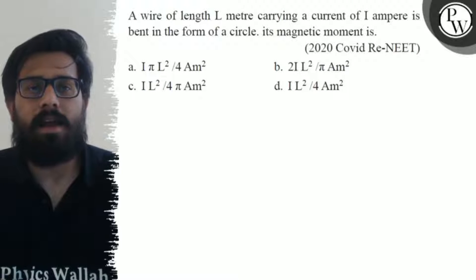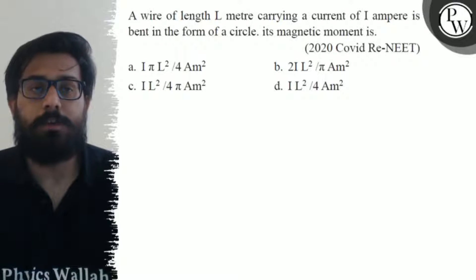Hello bachos, so let's see the question. A wire of length L meters carrying a current of I ampere is bent in the form of a circle. Its magnetic moment is: Your first option is I π L² upon 4 ampere meter square.